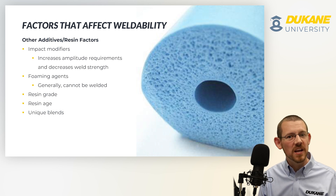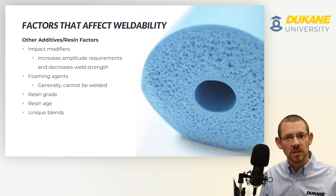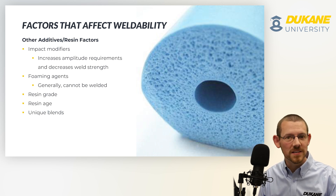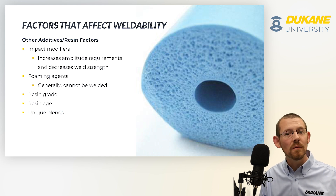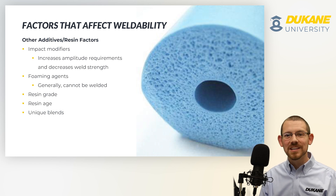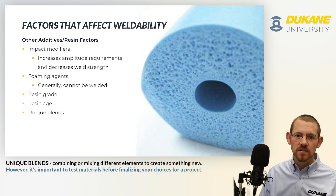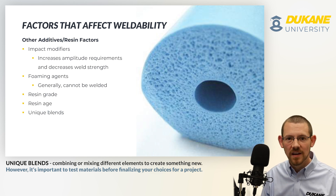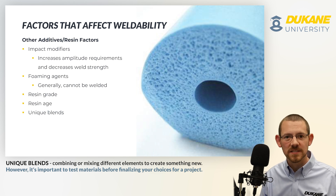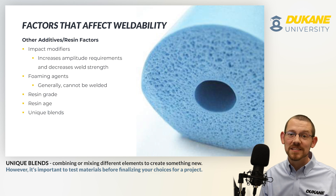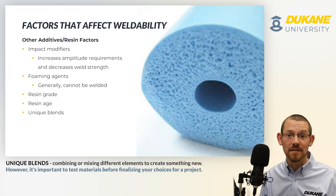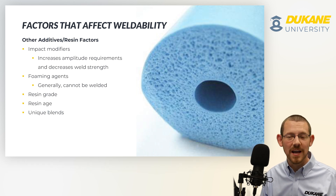Resin grade and age can also play a role — parts processed with a brand new batch of material will weld differently than if that material sits for a month or two, so keep in mind that as your resin ages, your weld process might have to change. There are also a lot of new unique blends on the market now, including biodegradable resins and amorphous/semi-crystalline blends with unusual melt behaviors. Some of these can be processed with ultrasonic welding, but because they don't have well-understood physical properties, your best course of action is to have an applications lab test sample plaques to confirm they can be reformed and bonded using ultrasonic welding.